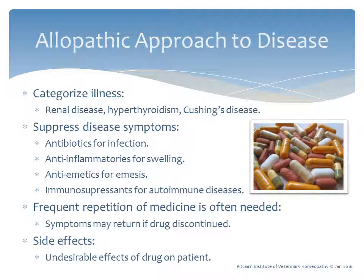The next step in allopathy is to suppress the disease symptoms. If there are infections, antibiotics are given. If there is swelling, anti-inflammatories are prescribed. If there is vomiting, anti-emetics are administered. For more severe illnesses such as autoimmune diseases, high doses of immunosuppressants are used. In all of these cases, frequent repetition of the medicine is often needed to maintain an effect, and the symptoms may return if the drug is discontinued.